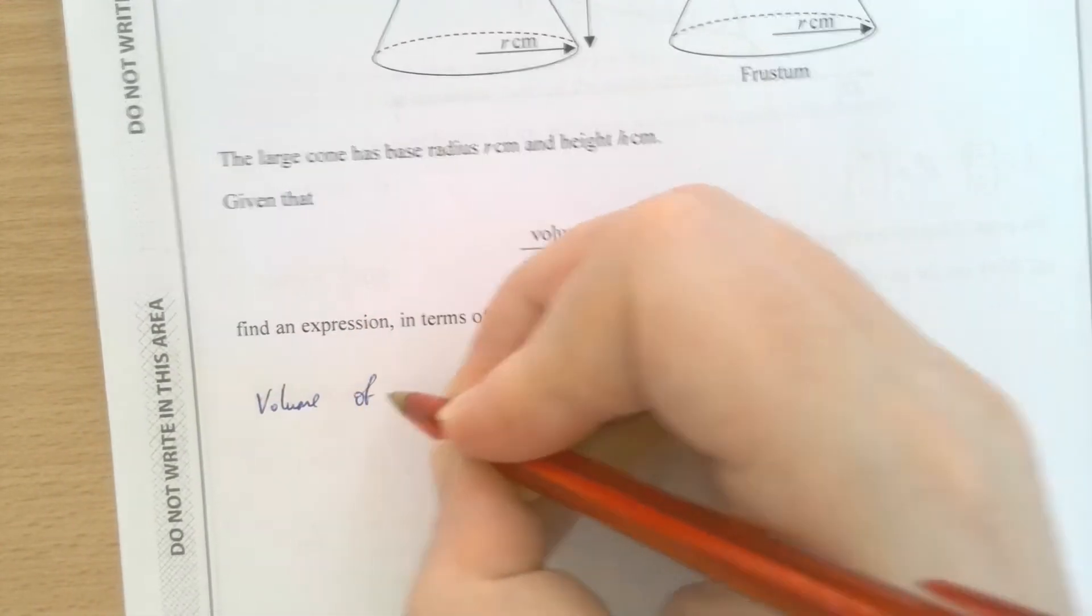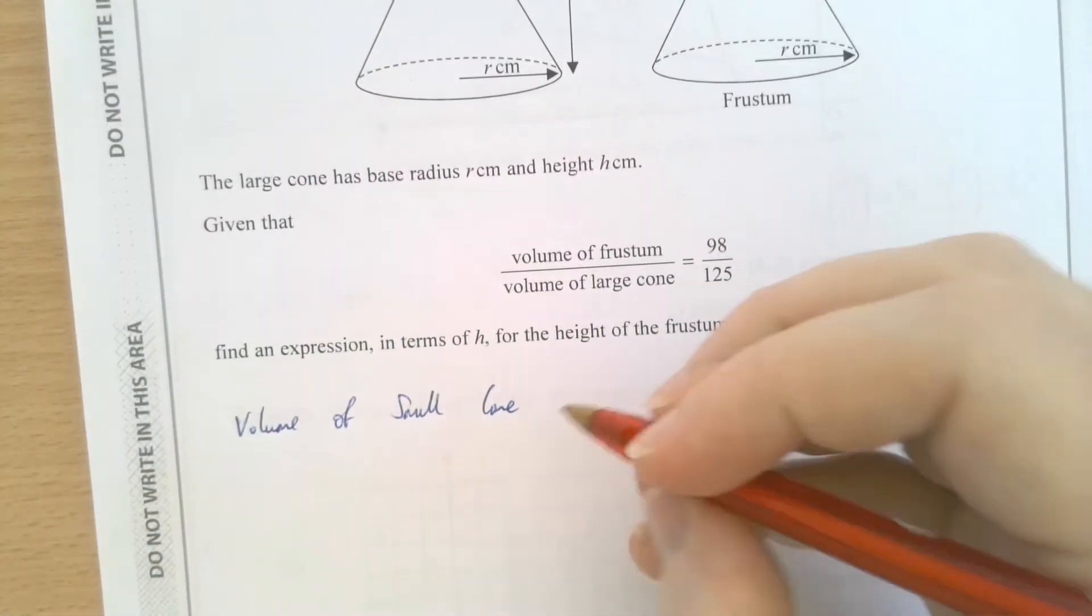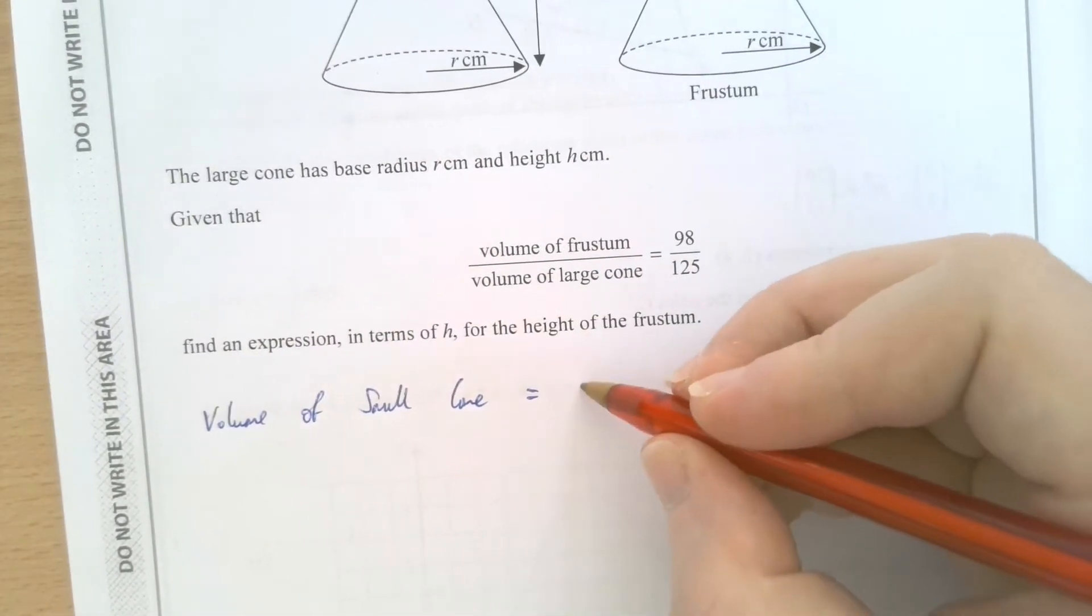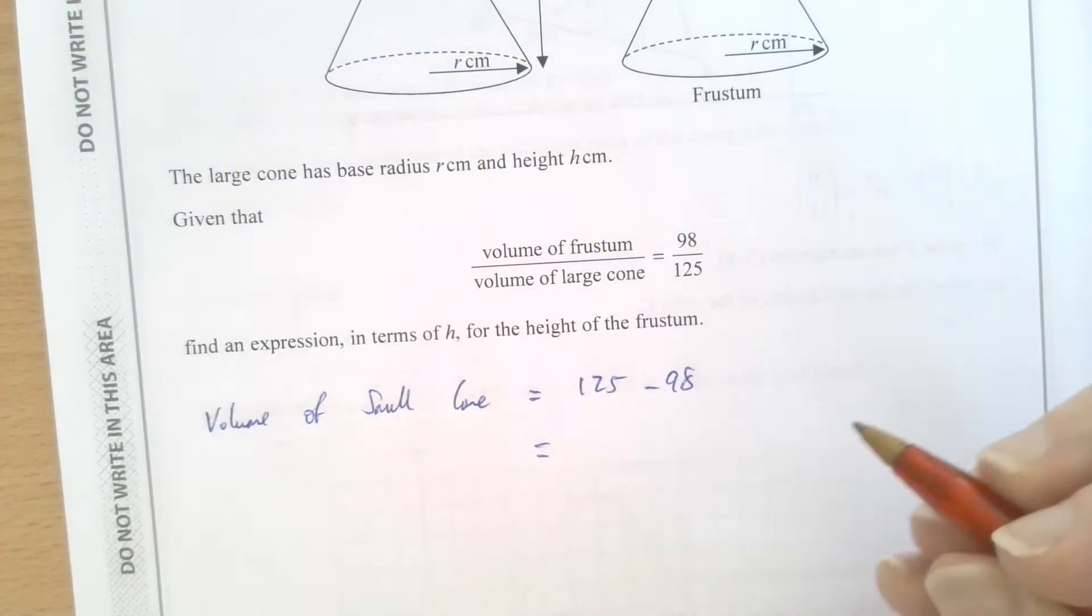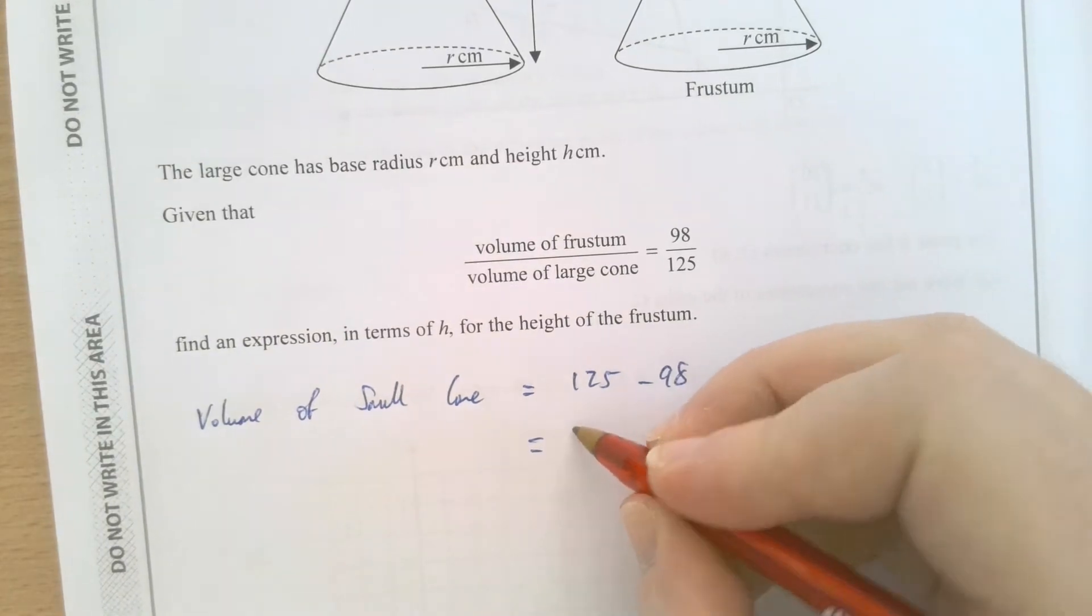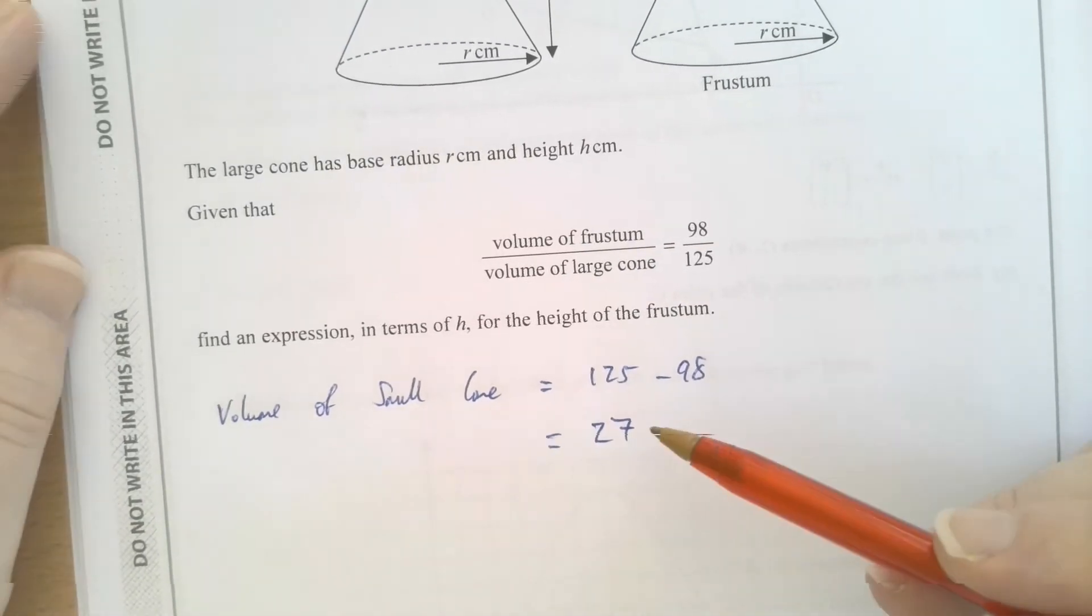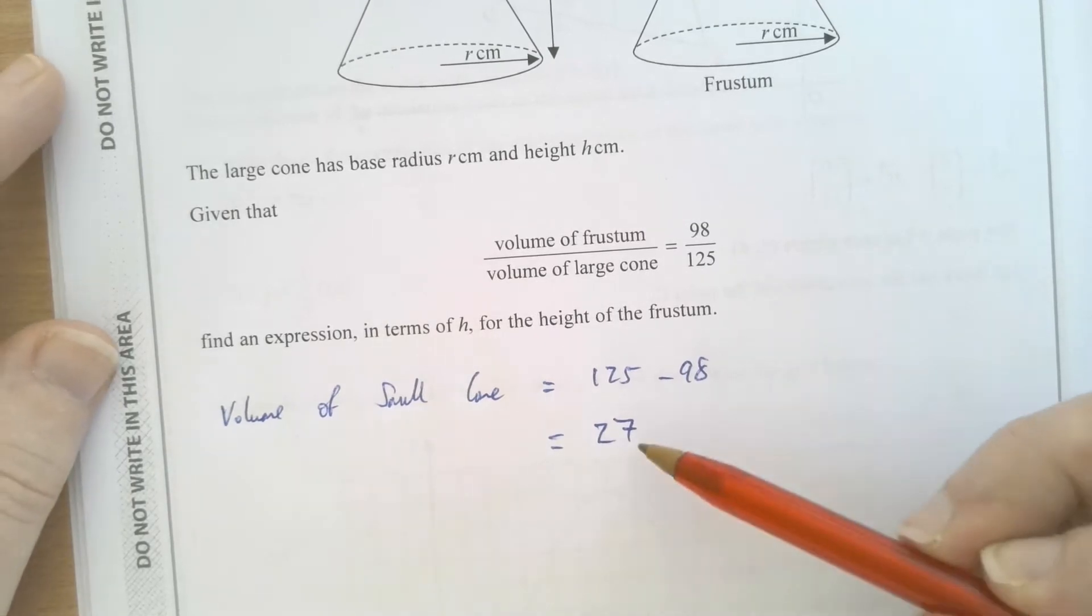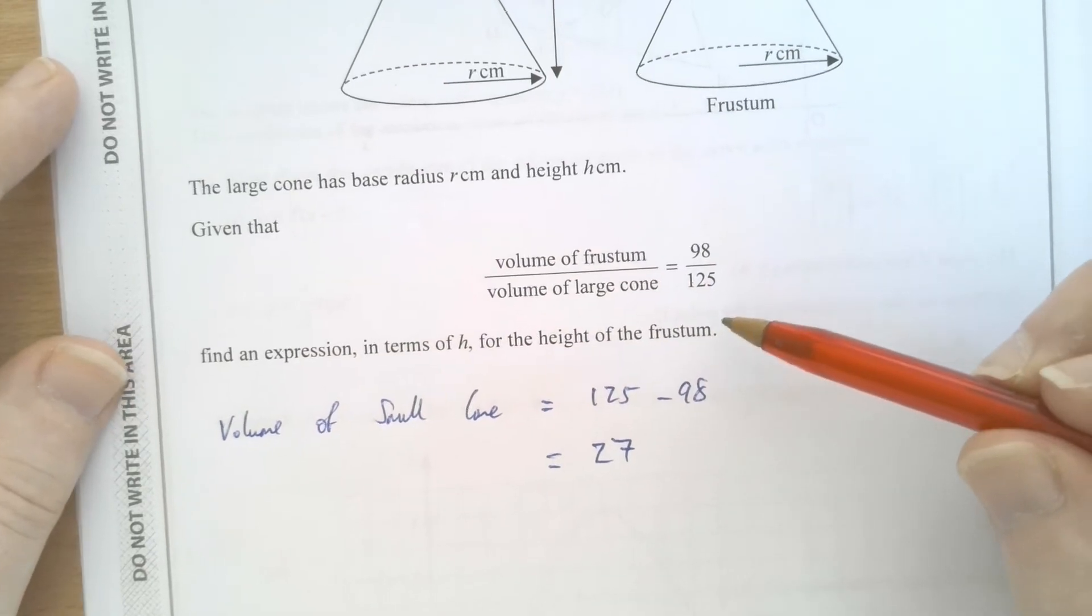The volume of the small cone, the invisible one that's been removed from the larger one to make the frustum. That's got to be the difference between the large cone volume and the frustum. I hope that makes sense. 125 take away 98. Actually, why do I need my calculator? I know that's 27. So 27 is the volume of the small cone.